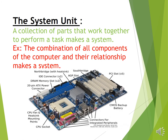A collection of parts that work together to perform a task makes a system. For example, a computer is made up of different parts: the system unit, keyboard, mouse, and monitor. These are the different parts.